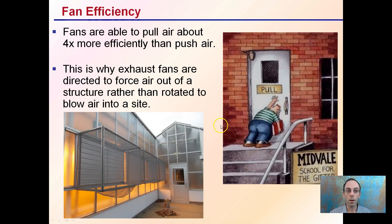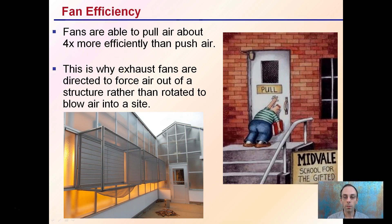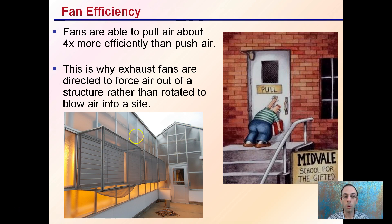Fan efficiency: fans are able to pull air about four times more efficiently than they push air. This is why exhaust fans are directed to force air out of a structure rather than rotated to blow air in. These fans are located inside the walls and blow air out. They're about four times more efficient at pulling air than pushing it, so blowing air in is not the better option.